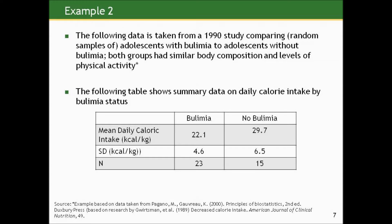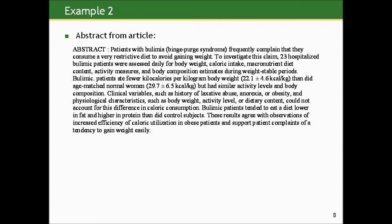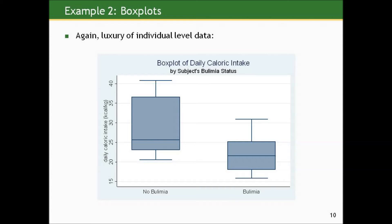Here's another interesting dataset. The following data is taken from a 1990 study comparing random samples of adolescents with bulimia to adolescents without bulimia. Both groups had similar body composition and levels of physical activity. The table shows summary data on daily calorie intake by bulimia status. Measuring kilocalories per kilogram, on average those with bulimia ingested 22.1 kilocalories per kilogram compared to 29.7 in the group without bulimia, with standard deviations given as well. I was actually able to access the individual-level data through the textbook by Pagano, and it's also displayed in the article, which is a rarity but can be done with small samples.